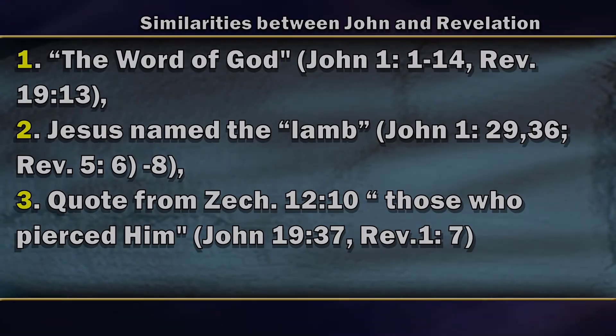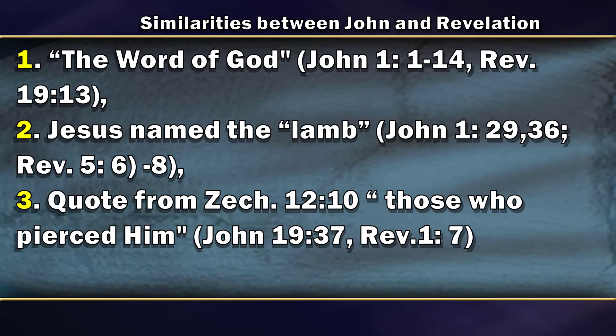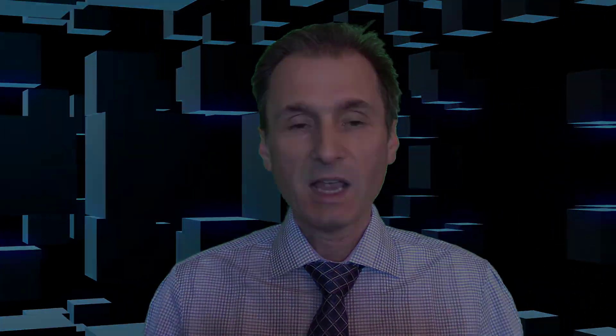So no doubt, the differences do exist. However, there are also many similarities between the two books. We have the Word of God used as a title for Jesus Christ in John 1:1-14 — the entire prologue tells us that Jesus is the Word. It is the very same title that John uses in Revelation chapter 19 for Christ as well. So Christ always functions as the Word of God.